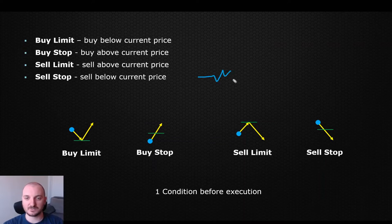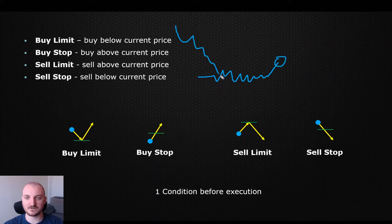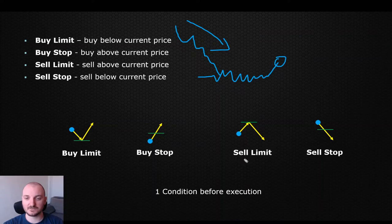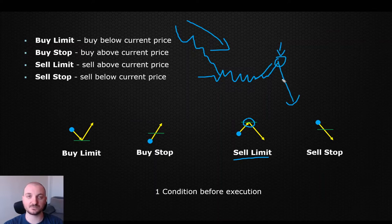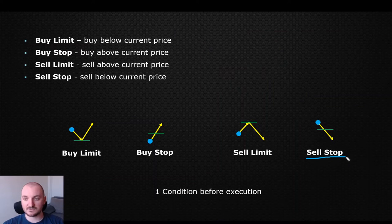Again, we have the price moving here and we want to trade the pullback. We're currently in a bearish momentum and we're looking for deeper pullbacks. If the current price moves a bit higher and reaches the zone that we want to see reached, this is where the sell will be executed, and our expectation is that the price will then continue lower.